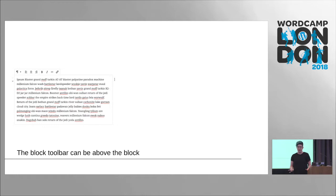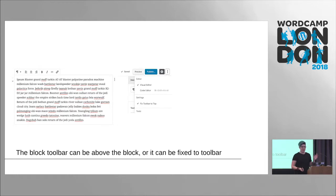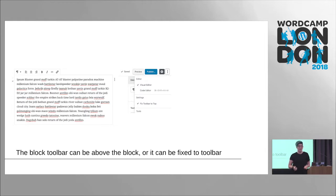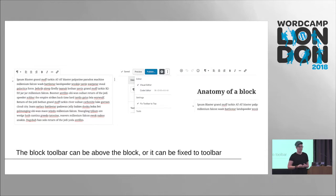Remember that setting where you could have the toolbar up or by the block? In usability testing we found that people were pretty much 50-50 split on whether they wanted it by the block or up on the toolbar. So we've given people the option to have either of those. We've gone back and forth on that, but for now we're settling to let people have that choice.